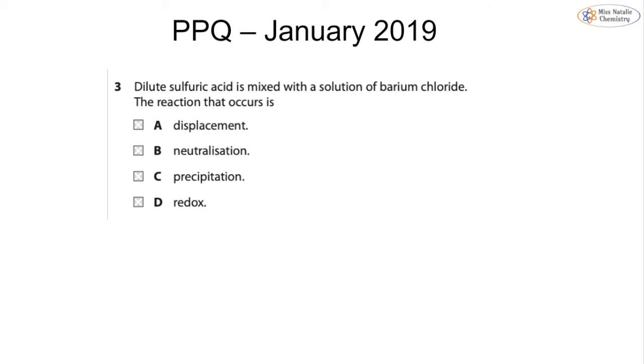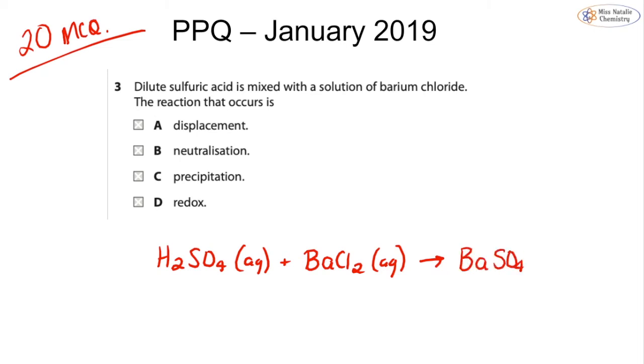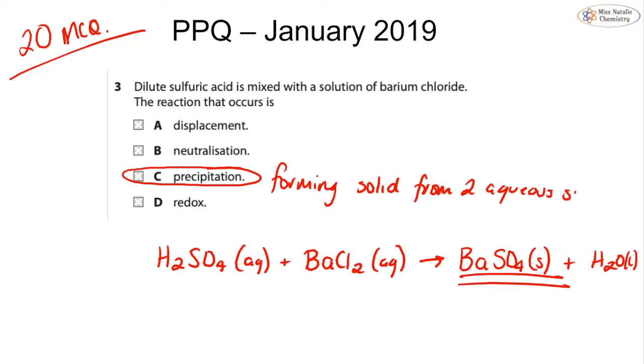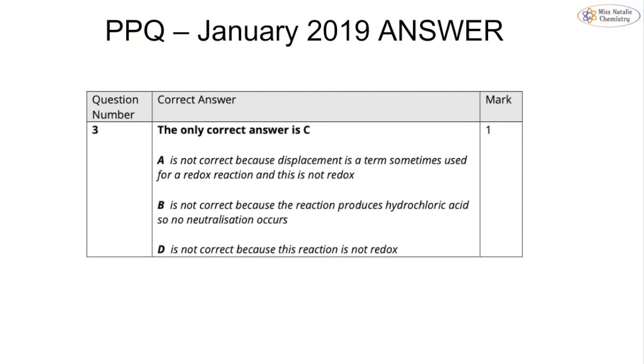Let's look at some past papers that could come up. Most of the time for this, they're going to be in your multiple choice. Remember, at A-level past papers, you're going to get 20 multiple choice questions in every single unit, as well as your written questions. In the January 2019 paper, it was asking about dilute sulfuric acid being mixed with barium chloride. So H2SO4 reacting with BaCl2. What are we going to form? We're going to form our salt and water. And you can see we're forming a solid. This is the test for a sulfate. So this is a precipitation reaction because we are forming a solid from two aqueous solutions. The answer is C.